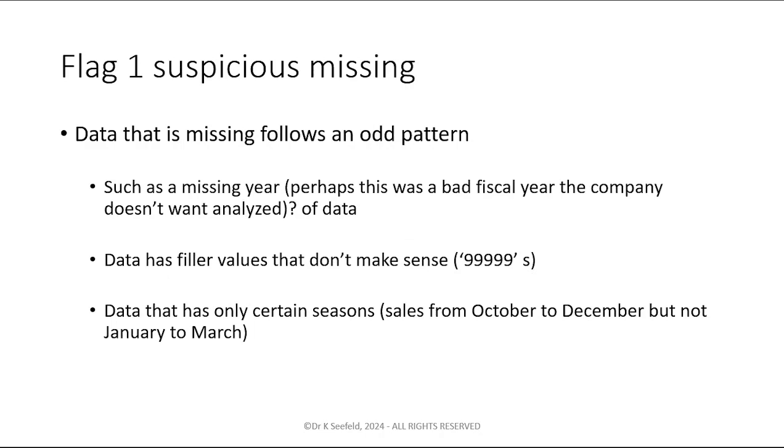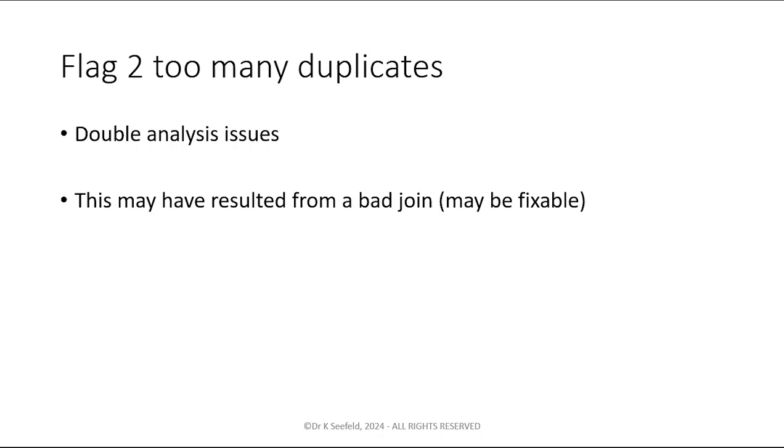Some flags of this: suspicious missing values is another problem. Suppose you have 10 years of data and there's a missing year. Oops, there's something wrong with the data. A lot of filler values can be problematic. If you have a bunch of data that's filled in with like these 9999999s, what are you going to do? Possibly data that only has certain seasons, like sales from October or December like before Christmas, and then they don't give you the sales data from January to March. Well, you can't really analyze a time trend on that, at least not for other than the time period that you have.